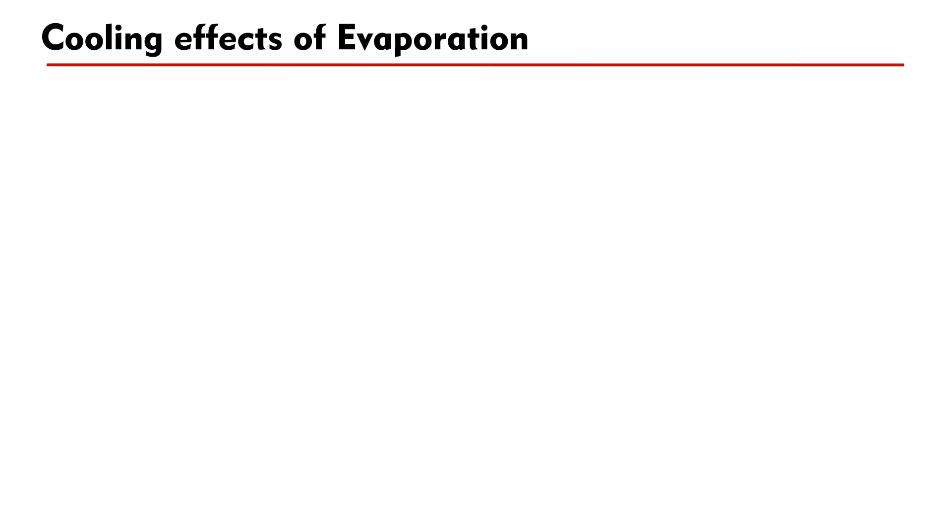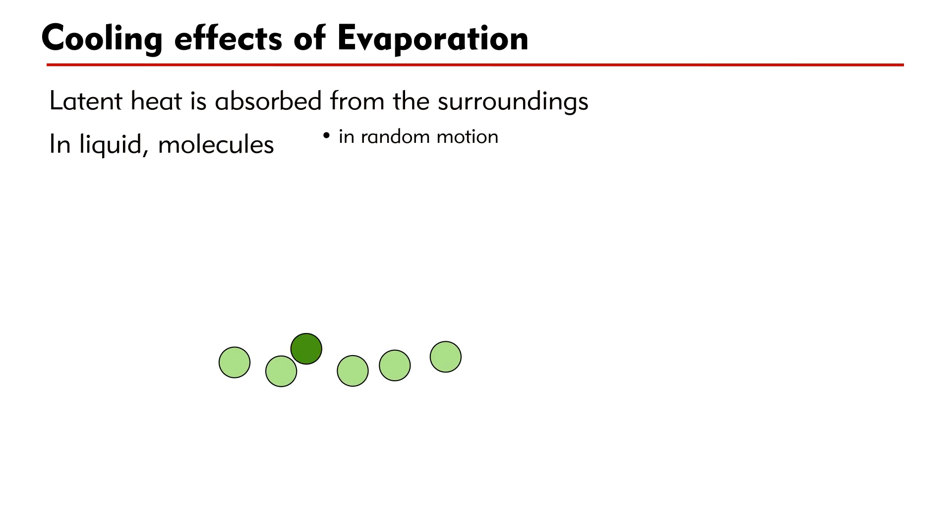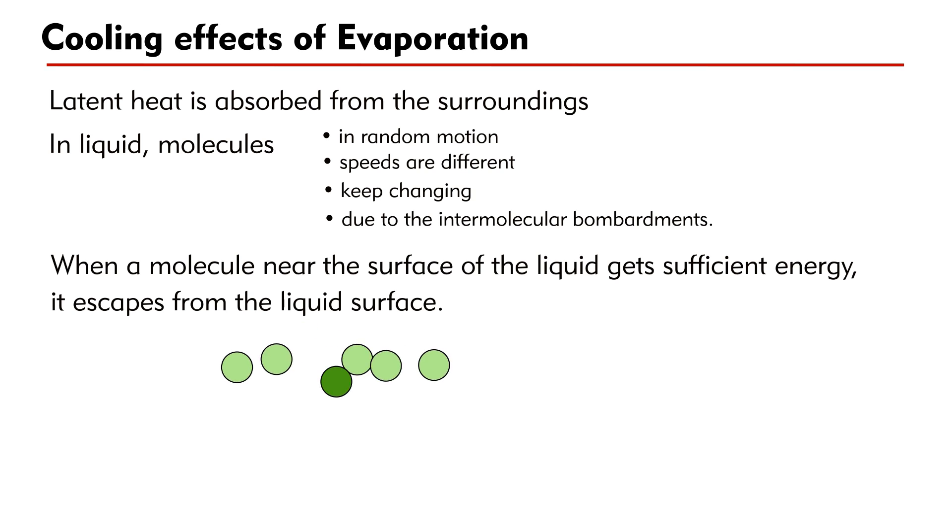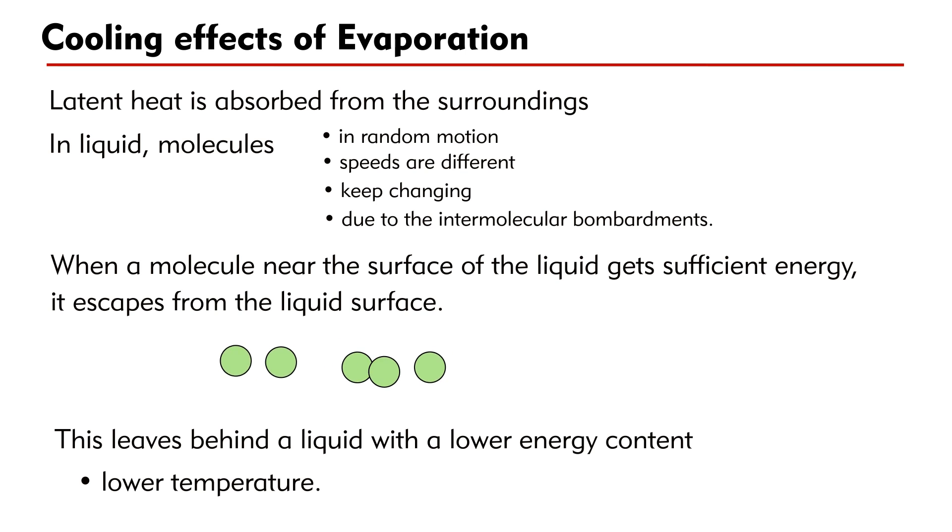Evaporation produces cooling effects because the latent heat is absorbed from the surroundings. We can view this in terms of molecular motion. In liquid, the speeds of molecules in random motion are different and keep changing due to intermolecular bombardments. When a molecule near the surface of the liquid gets sufficient speed or energy, it escapes from the liquid surface. This leaves behind a liquid with a lower energy content, which means lower temperature.